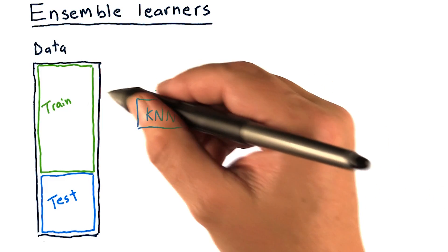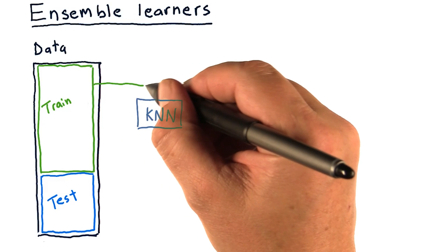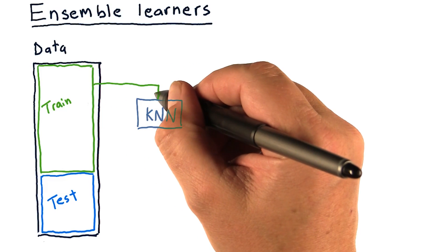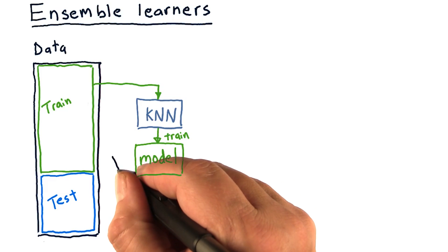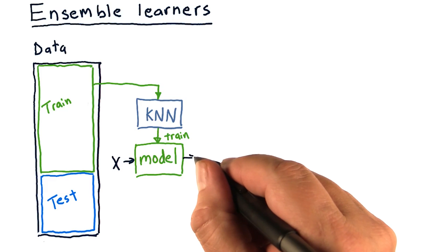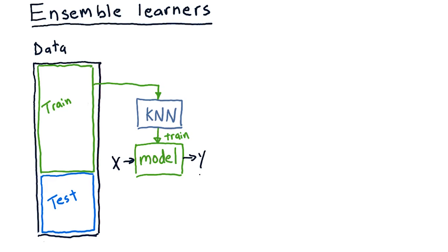Now, what we've been doing so far is we've had one kind of learning method, say KNN. We plug our data into there and we learn a model. We can query our model with an X and it'll give us a Y. So this is not an ensemble learner, this is just a single learner.